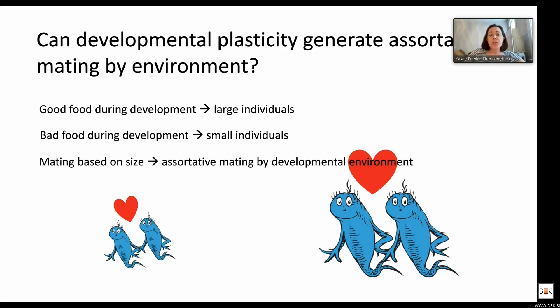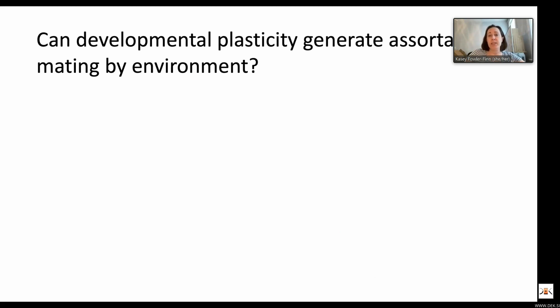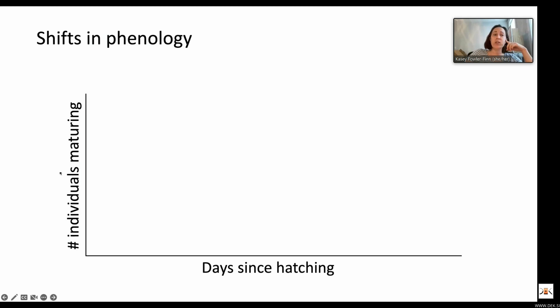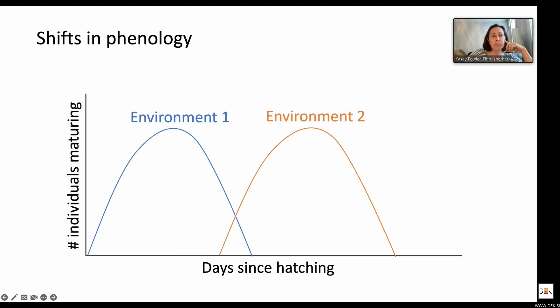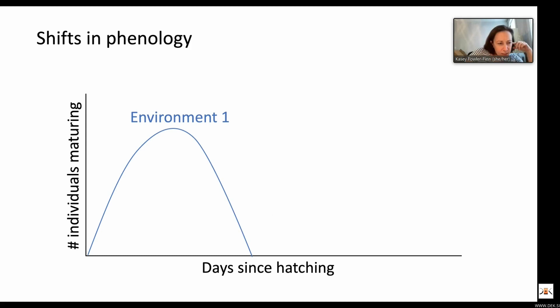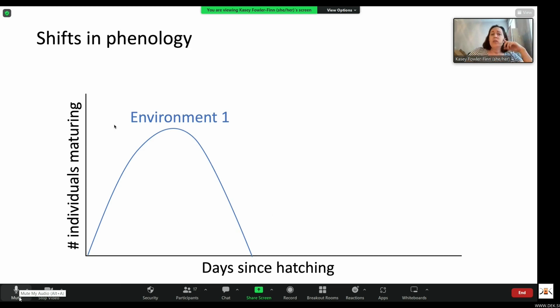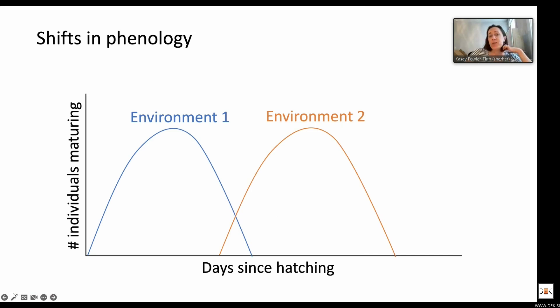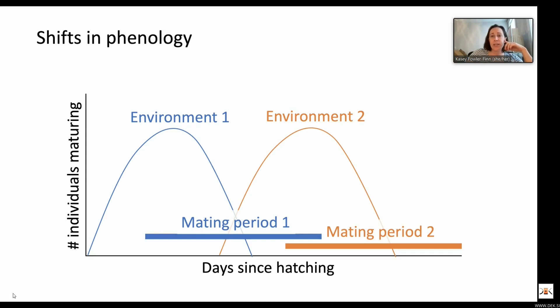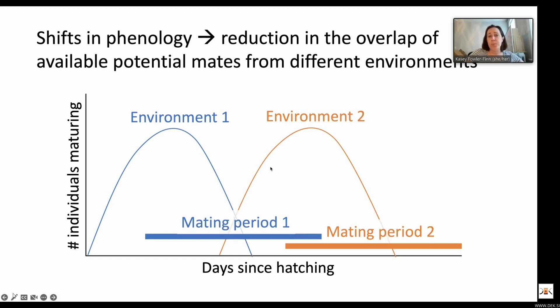There are several processes by which developmental plasticity can generate assortative mating by environment. First, you can have shifts in phenology. On the y-axis we have the number of individuals in a population that mature, and on the x-axis we have the days since hatching. In environment one, individuals are maturing earlier, and in environment two, individuals are maturing later. That means their mating periods are non-overlapping, so you can have a reduction in the overlap of available potential mates from different environments, generating assortative mating by environment.